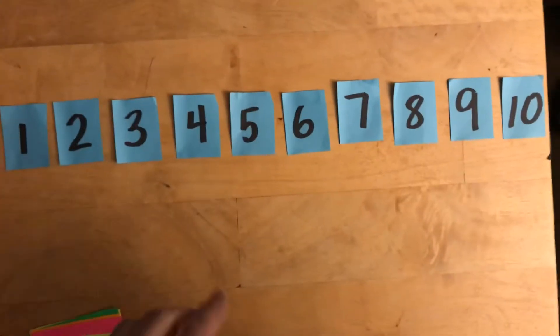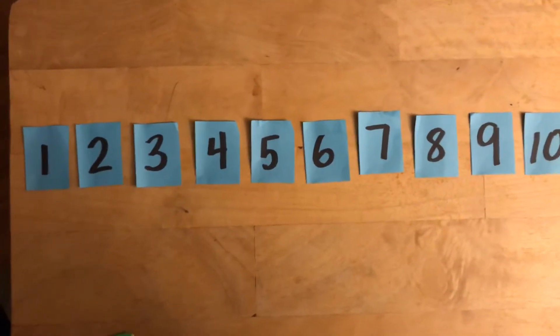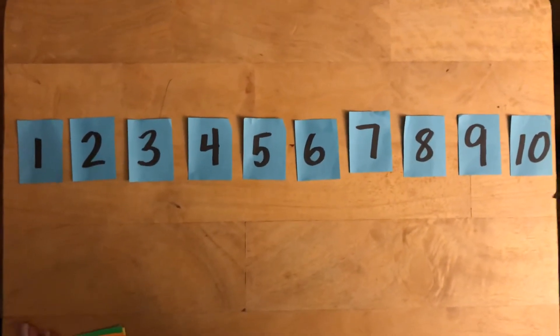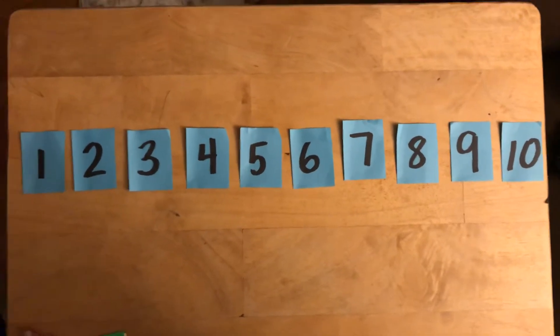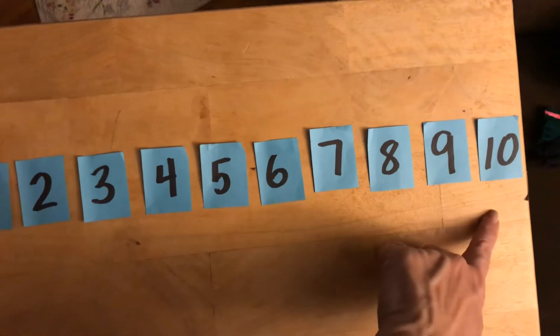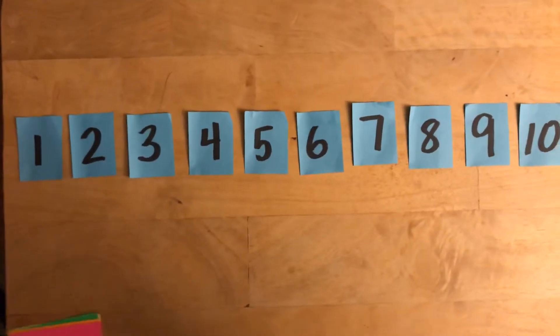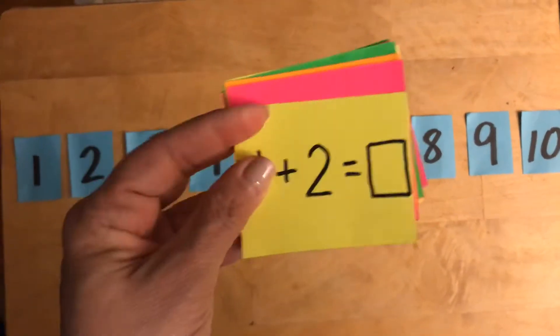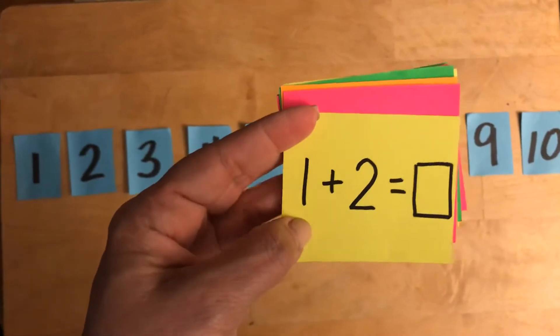Here I have my number line, and I bet it looks familiar from my number bond videos, and so you and your family can do the same thing. Numbers in a line from 1 to 10.